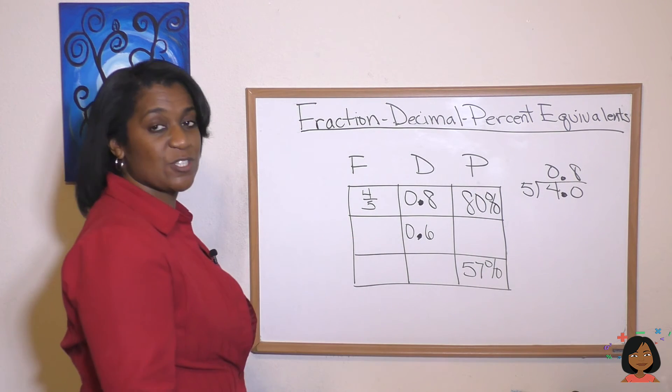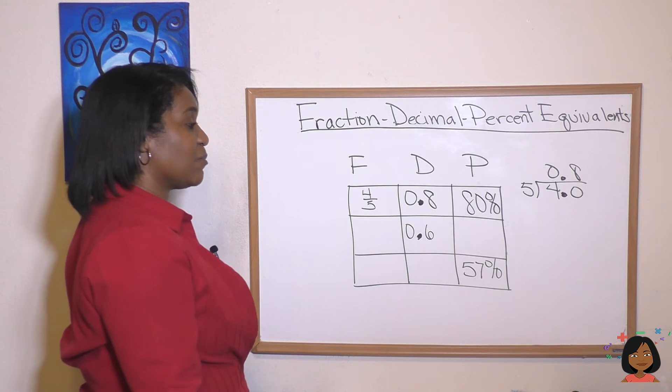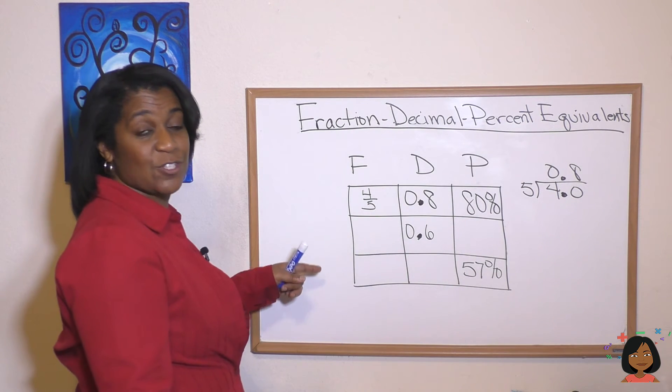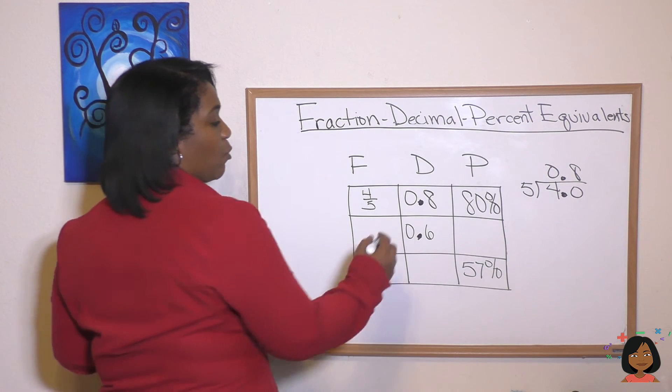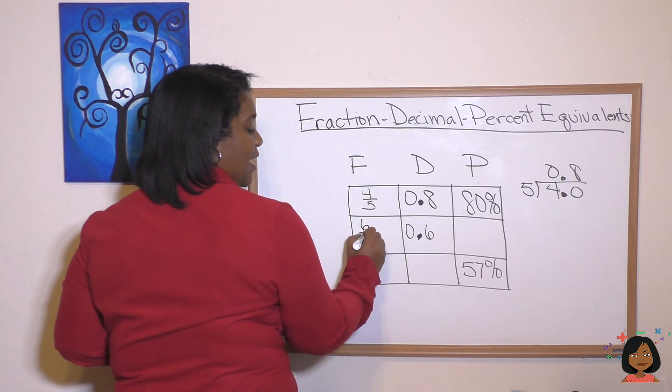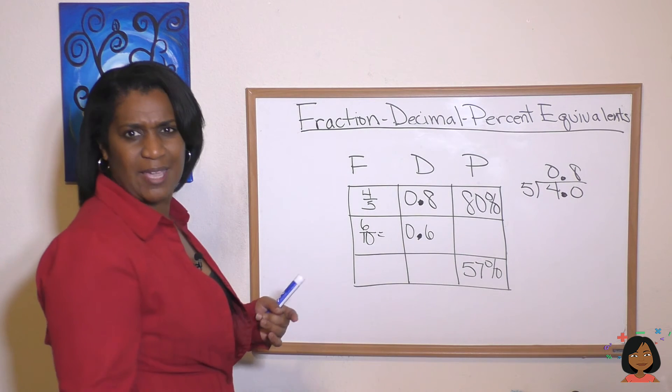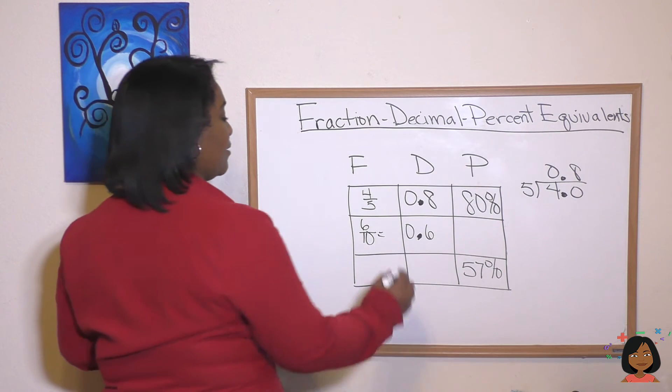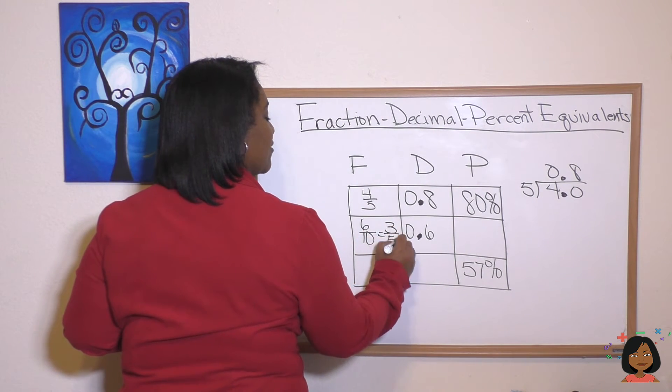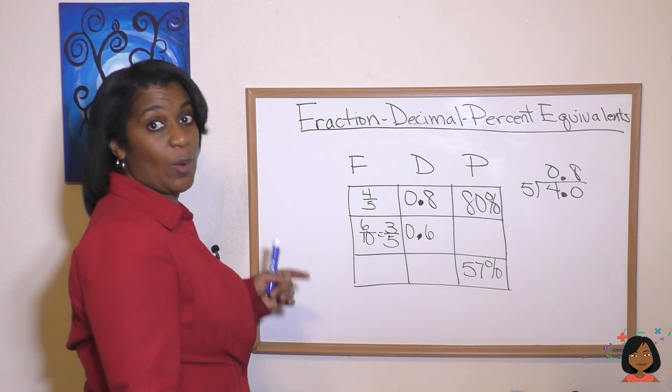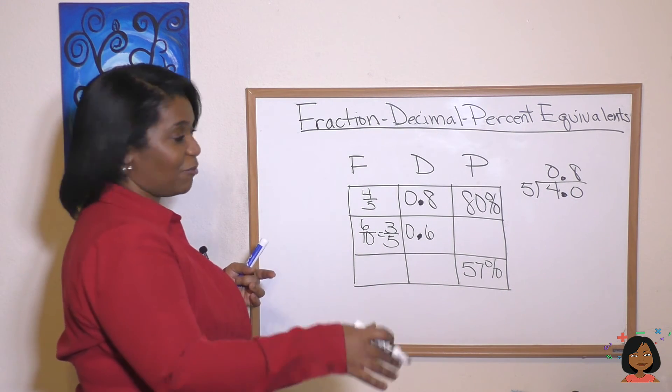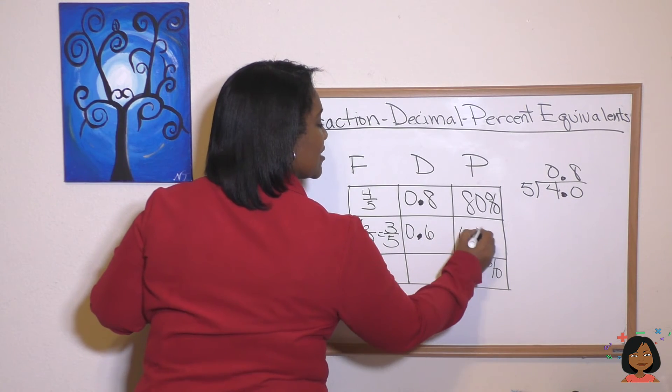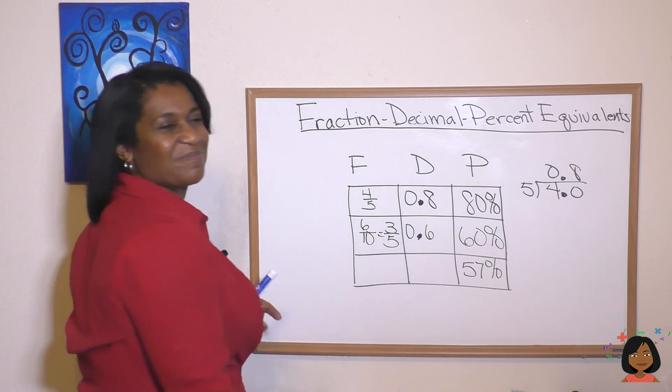Now what happens if we start with 0.6 as a decimal? Well we're going to move back to fraction by putting it over the correct place value. So we know that 0.6 is the same thing as saying six tenths. And now we look to see. Can we simplify? And yes we can. We can go to three fifths. What about going to the percent? Well we know all we have to do is move our decimal two to the right. So this is going to be 60 percent.